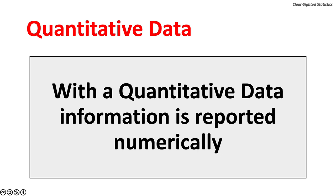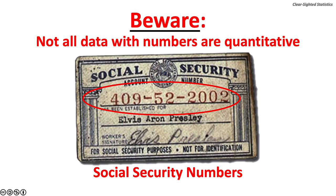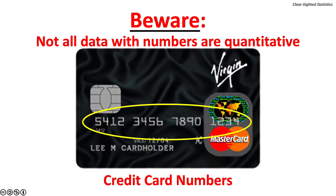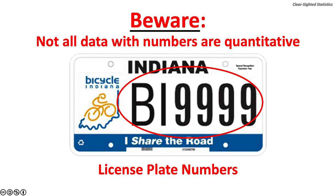With quantitative data, information is reported numerically. Beware: not all data with numbers are quantitative. A person's social security number is not quantitative data — it is merely an identification code, which is another way of saying a name. Credit card numbers are also identification codes, as are the numbers and letters on automobile license plates.